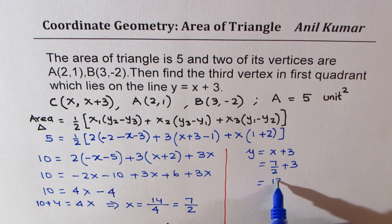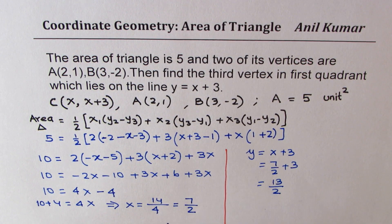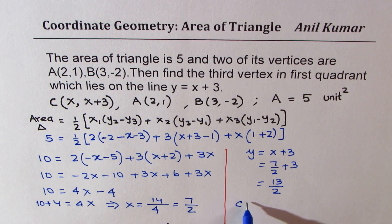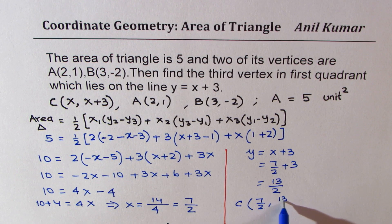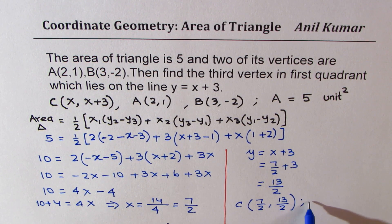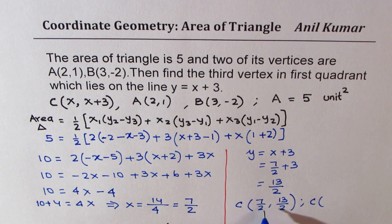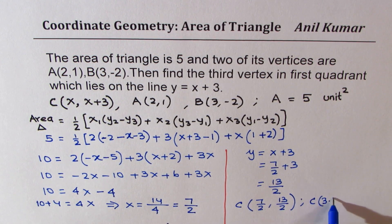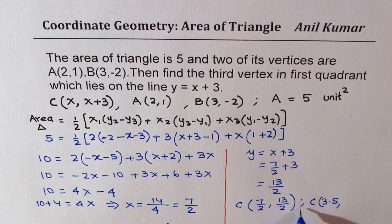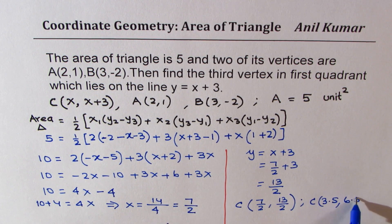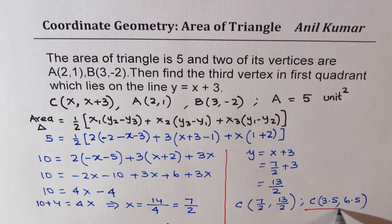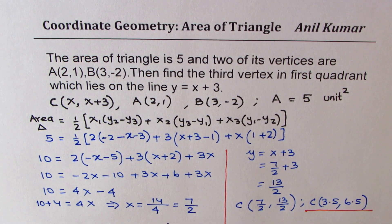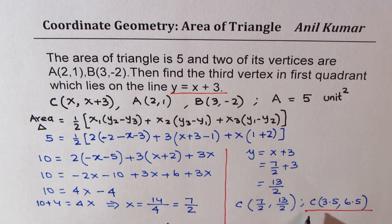6 + 7 is 13/2. So that becomes the y value. And therefore we can say that the point C is (7/2, 13/2). You could also write this in decimals: 7÷2 is 3.5, and plus 3 gives you 6.5. So that becomes the answer. Therefore the coordinate points on the line y = x + 3 will be (3.5, 6.5).